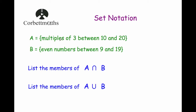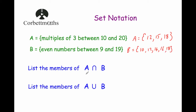Our next question has wordy descriptions rather than numbers. A is the set of multiples of 3 between 10 and 20, so A = {12, 15, 18}. B is the set of even numbers between 9 and 19, so B = {10, 12, 14, 16, 18}. The first question says list the members of A intersect B — the numbers in both sets — which would be 12 and 18. List the members of A union B — any number in A or B — which would be {10, 12, 14, 15, 16, 18}.